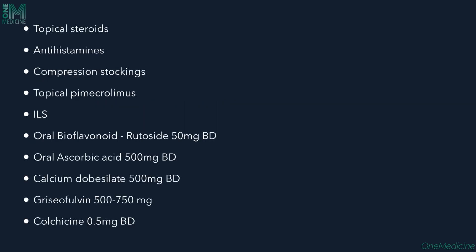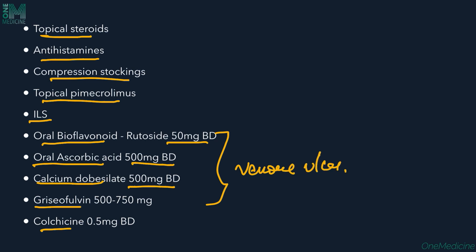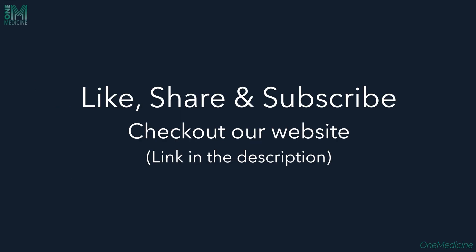Treatment options include topical steroids as first-line therapy, antihistamines if the patient has itching, compression stockings, topical pimecrolimus (a calcineurin inhibitor), and intralesional steroids for palpable lesions. Oral options include bioflavonoids such as rutoside 50 mg twice daily, ascorbic acid 500 mg BD, calcium dobesilate 500 mg BD, griseofulvin 500–750 mg, colchicine 0.5 mg BD, minocycline, pentoxifylline 400 mg TID, systemic steroids, cyclosporine, and methotrexate. Phototherapy, laser therapy, and photodynamic therapy have recently been introduced to reduce pigmentation.